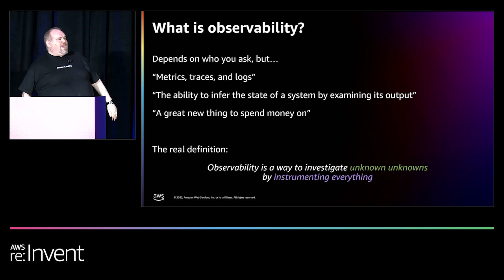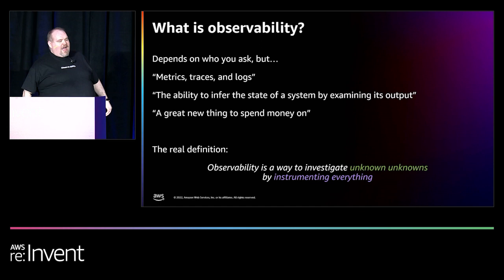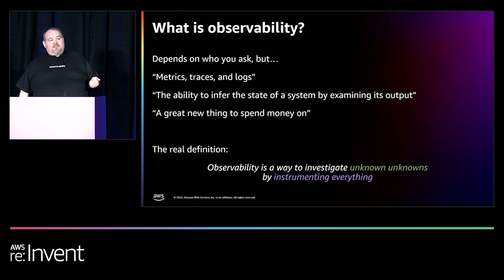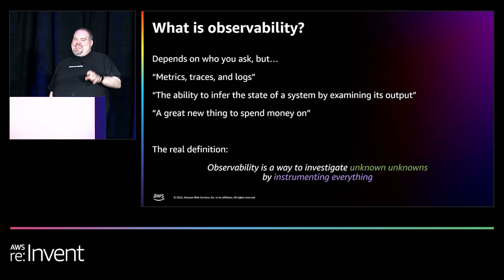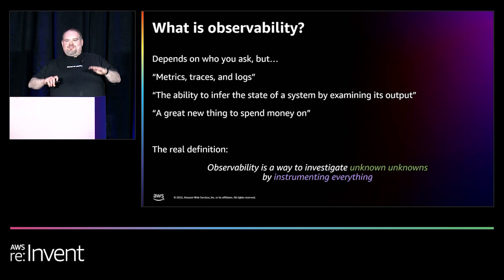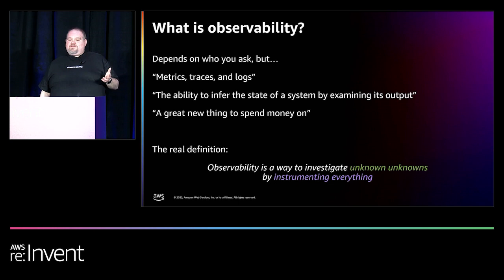Really, what observability is: it's a way to investigate things you couldn't know would break, because the infrastructure is so complicated. You can't anticipate that a butterfly flapping its wings in Taiwan creates a tornado in your backyard — it's the same with modern services. The way you do this is by instrumenting everything, collecting data from every service and every user interaction, then relying on tools to make sense of all of that. Observability tools are about taking all your data and telling you: this is the thing you should care about.